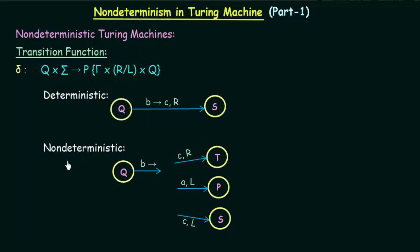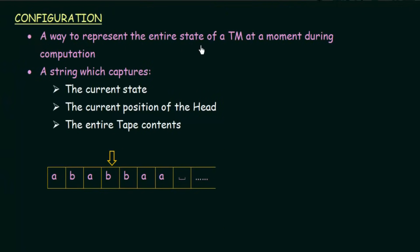We will now see how the configuration of a deterministic Turing Machine differs from that of a non-deterministic one. Configuration is defined as a way to represent the entire state of a Turing Machine at a moment during computation. It is a string which captures the current state, the current position of the head, and the entire tape contents. We need a string which can represent all these things.